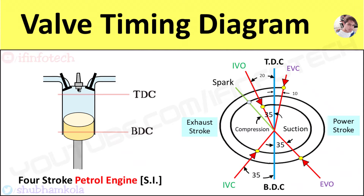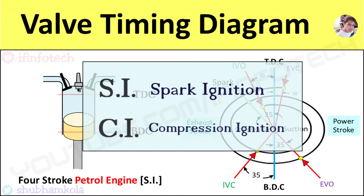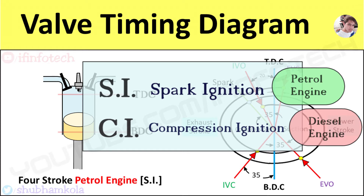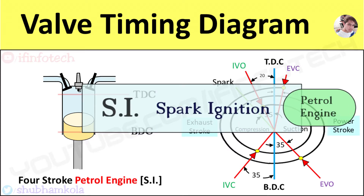Hi everyone, in this video we'll discuss the actual valve timing diagram for SI and CI engines. SI is spark ignition, which indicates the use of a spark to ignite the fuel, and it is used in petrol engines. CI is compression ignition, where air is compressed within the cylinder and the heat of this compressed air is used to ignite the fuel, and it is used in diesel engines. In this video, we'll discuss the valve timing diagram for the SI four-stroke engine, that is the petrol engine.